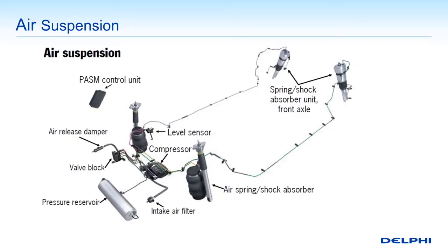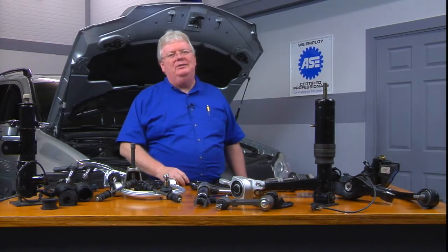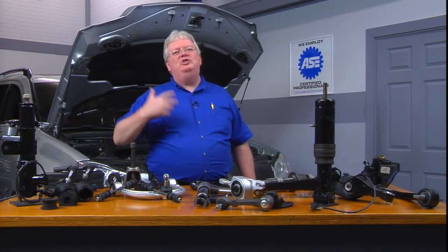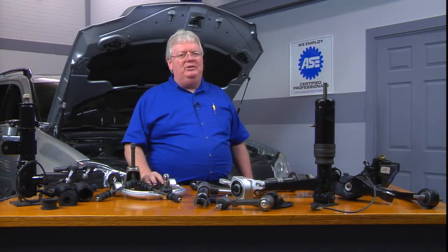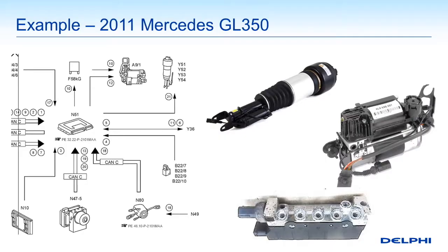So we see level sensors, dampers with air releases, a compressor, and a valve block. All these things on the Audi you see in this block illustration are also on the Mercedes behind me. A lot of similarities — maybe some name changes, which is typical between OEM and OEM — but you get the picture: you learn one and you can pretty much adapt yourself to learn them all.